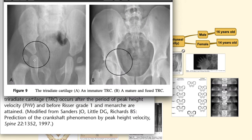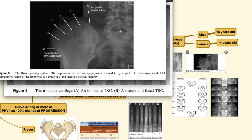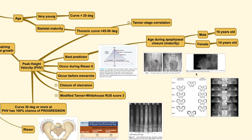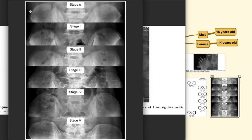The triradiate cartilage is shown here: one image shows an immature triradiate cartilage and the other shows complete fusion. Regarding the Risser sign, the apophysis growth plate progresses from lateral to medial, advancing from stage 1 through stage 2, stage 3, stage 4, and then stage 5 when the entire apophysis has fused and the black line is no longer visible. Another image demonstrates the full progression from stage 0, where only faint ossification lines are present, up through stage 5 where the apophysis completely fuses.